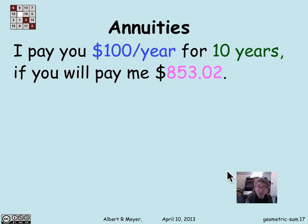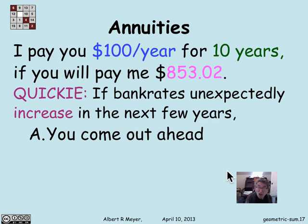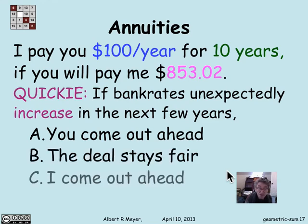That's a typical case where geometric series come up, and you'll see other examples in the problems. Just a quick thing to think about: suppose bank rates unexpectedly increase — the Fed gets the economy moving and interest rates jump to 5%. You've already paid me $853 and I've committed to paying you $100 a year for 10 years starting in a year. Who comes out ahead if bank rates increase — you, me, or is the deal still fair? I'll close by letting you think about that question.